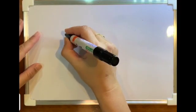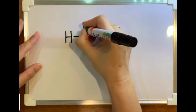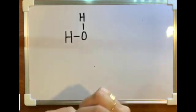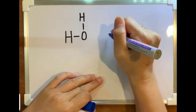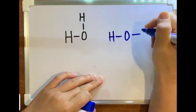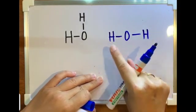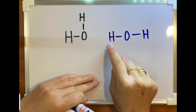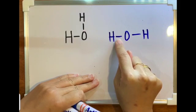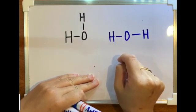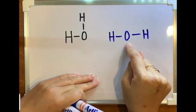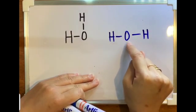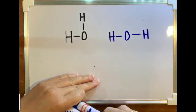First of all, students, you need to draw out the structural formula of water molecule. You have learned this in the covalent compound before. In the structural formula, the hydrogen and the oxygen form a single covalent bond due to the sharing of one pair of electrons between hydrogen and oxygen. When hydrogen shares a pair of electrons with oxygen, hydrogen achieves duplet, and oxygen achieves octet electron arrangement.